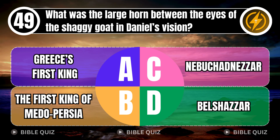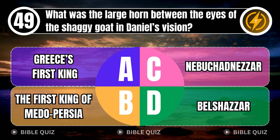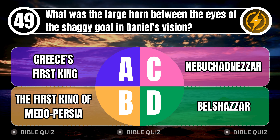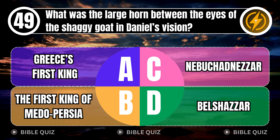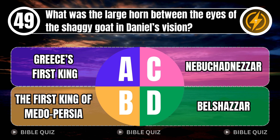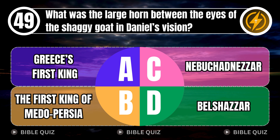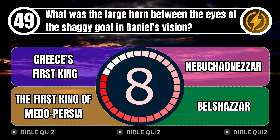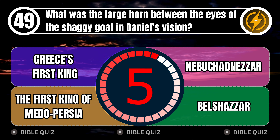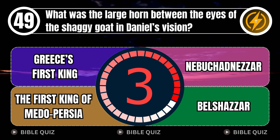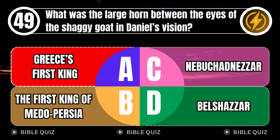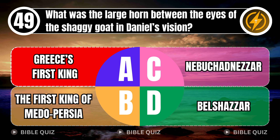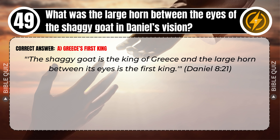Question 49: What was the large horn between the eyes of the shaggy goat in Daniel's vision? A. Greece's first king. B. The first king of Medo-Persia. C. Nebuchadnezzar. D. Belshazzar. Correct answer: A. Greece's first king. The shaggy goat is the king of Greece, and the large horn between its eyes is the first king. Daniel 8 verse 21.